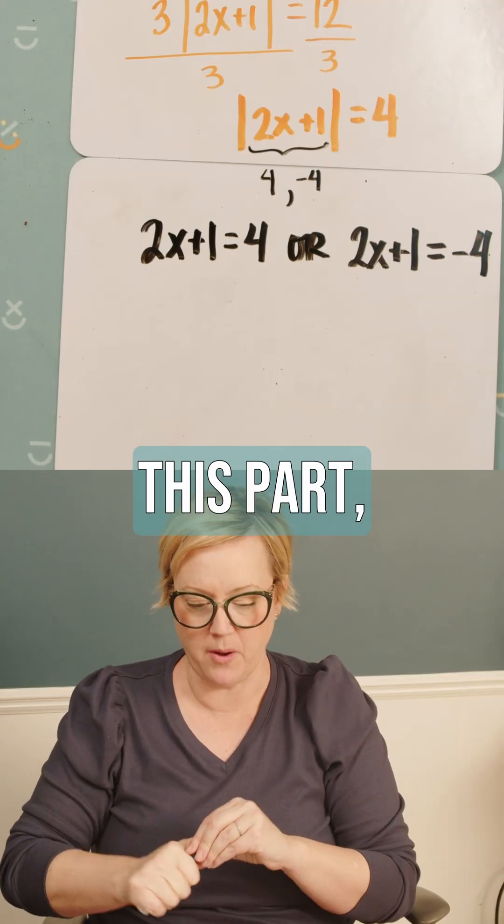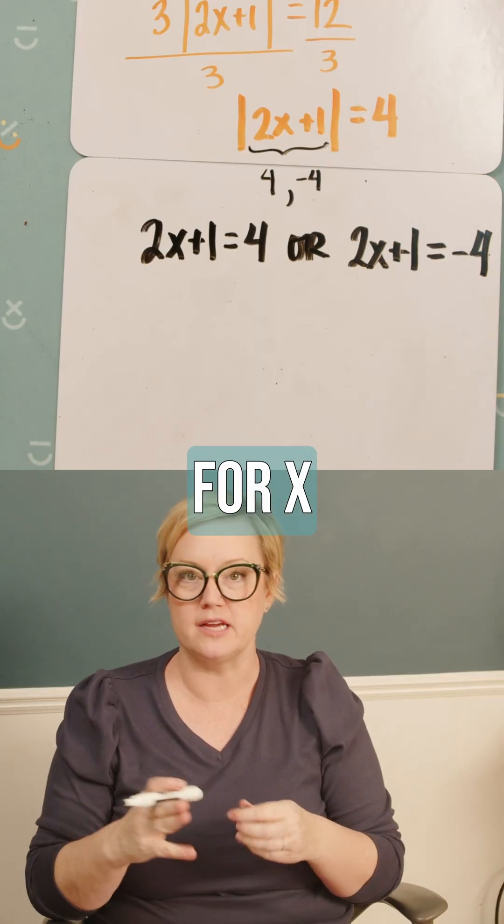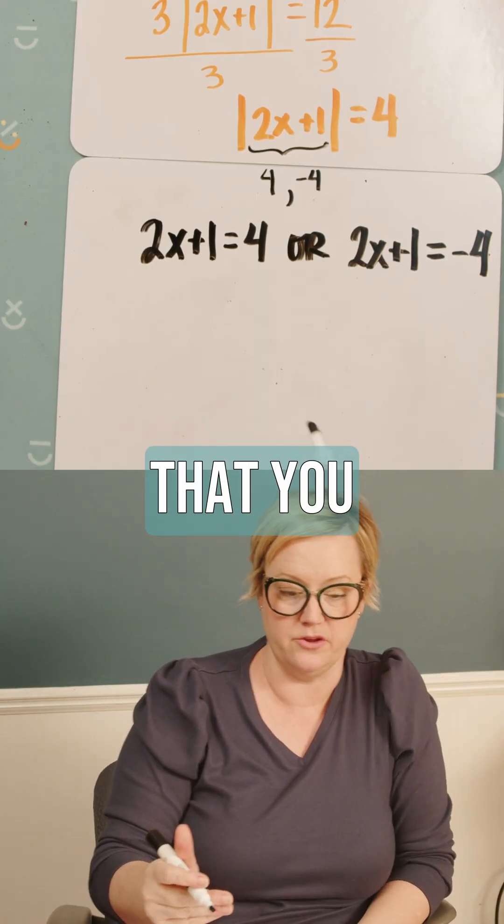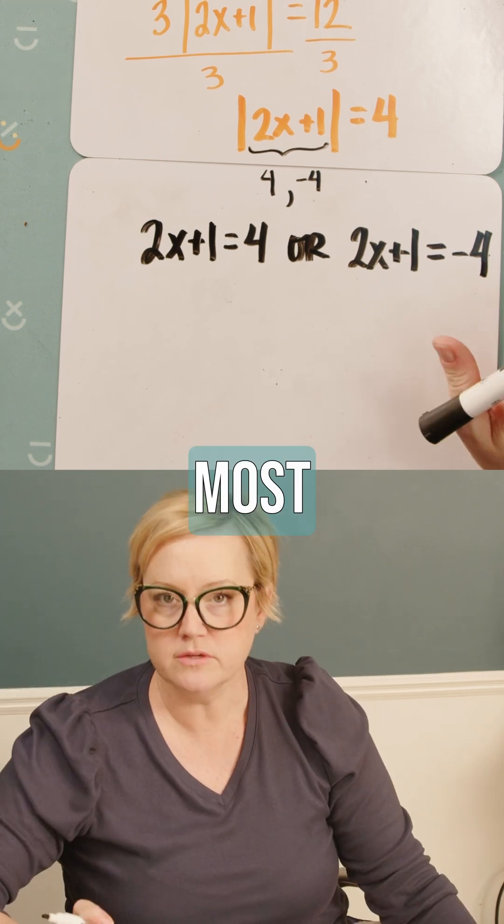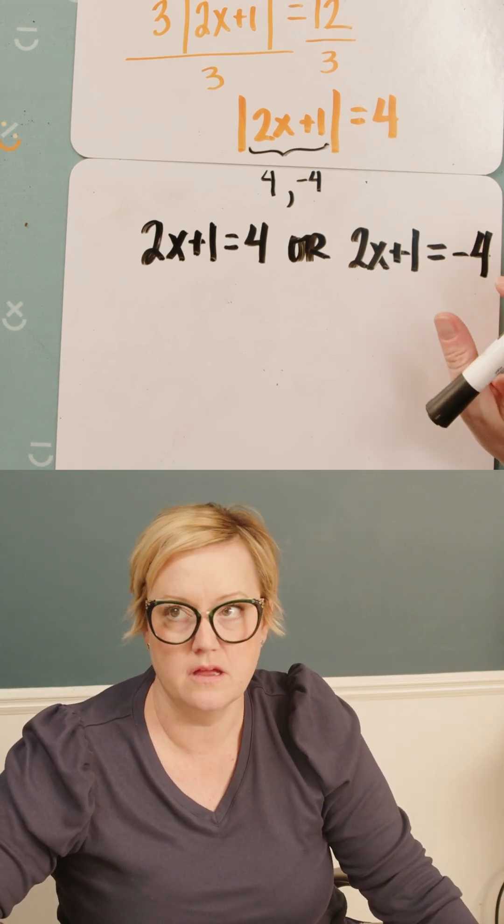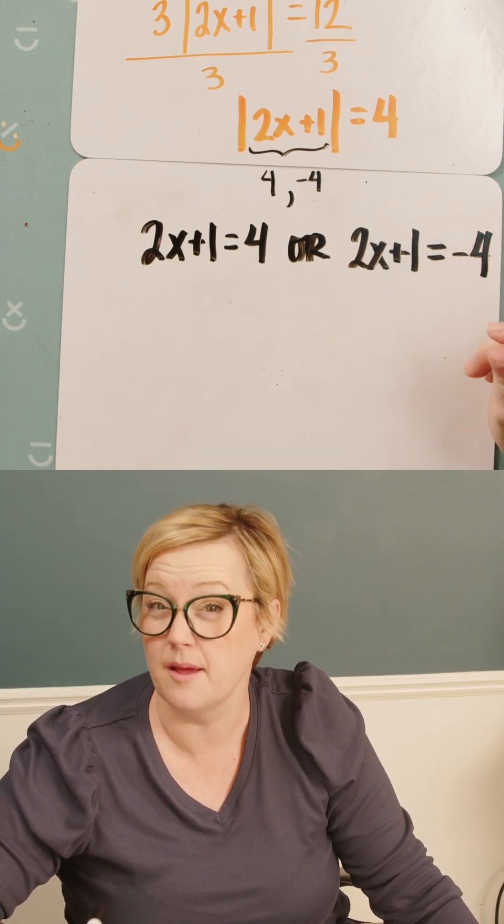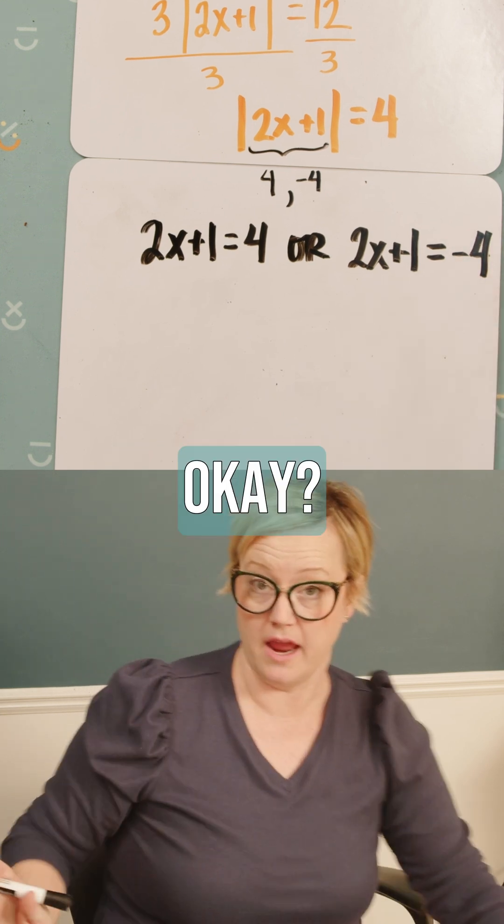So then once you get to this part, now you're just solving for x because there's two different values for x that you can have. Most absolute value problems will end up with two solutions. Some end up with one, some end up with none, some end up with infinite.